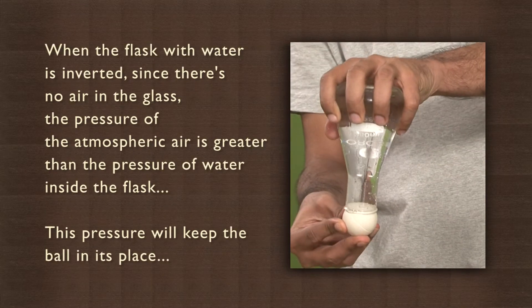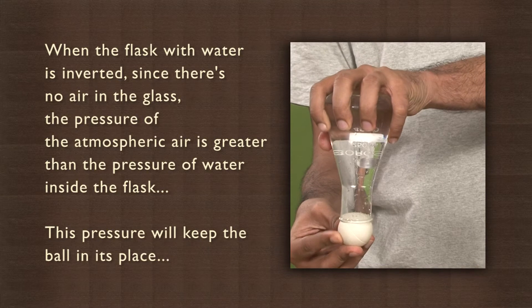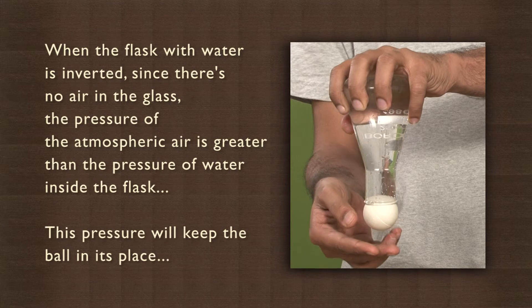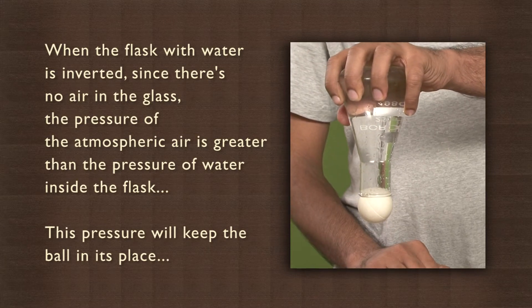When the flask with water is inverted, since there is no air in the glass, the pressure of the atmospheric air is greater than the pressure of the water inside the flask. This pressure will keep the ball in its place.